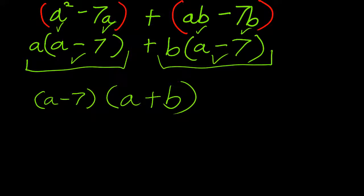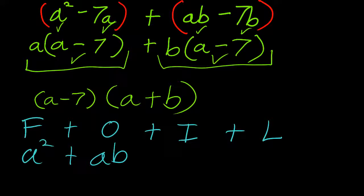Now, how can we be sure that we got it right? By foiling. F plus O plus I plus L. A times a is a squared. Outside is a times b.